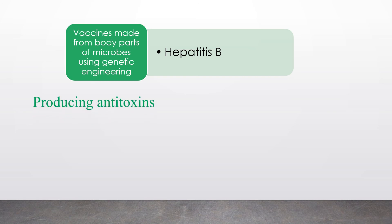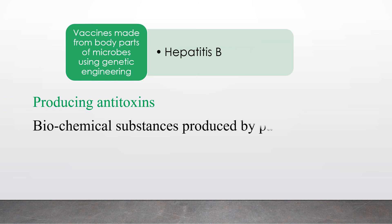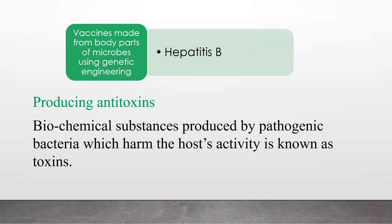The next application is producing antitoxins. Biochemical substances produced by pathogenic bacteria that harm the host's activity are known as toxins. An example is tetanus. These are also applied as vaccines.